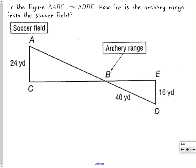I have these two triangles, and they do say right at the beginning. In this figure, triangle ABC is similar to triangle DBE. That's what that squiggle means. Remember, that's similar. How far is the archery range from the soccer field? So if I know that in the smaller triangle, I have the 16 that matches up with the 24, and the 40, this is on this diagonal kind of part, that's going to match up with this part of the bigger triangle. The X goes from really A to B.